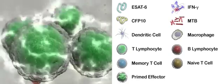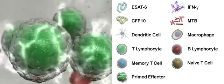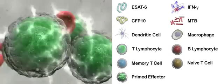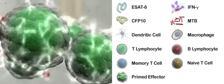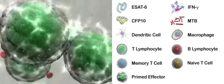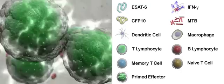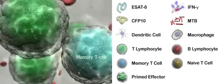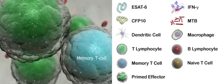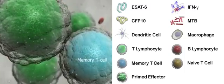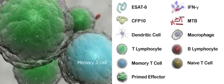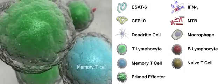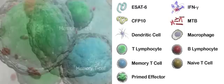The primed effector cells can continue to make antigen, or in the absence of sufficient antigen, some will go into a resting state. T lymphocytes may differentiate into memory T cells, which are capable of clonal expansion on antigen re-exposure.